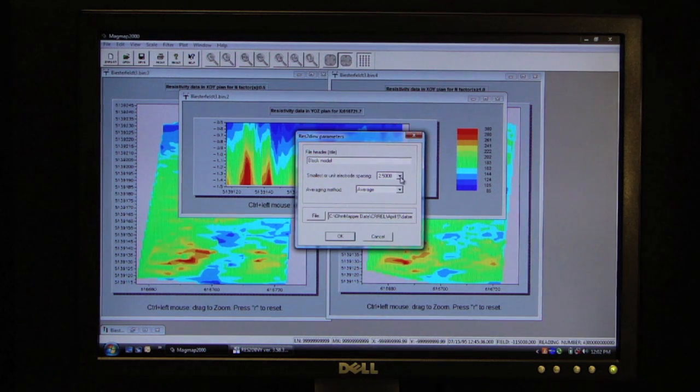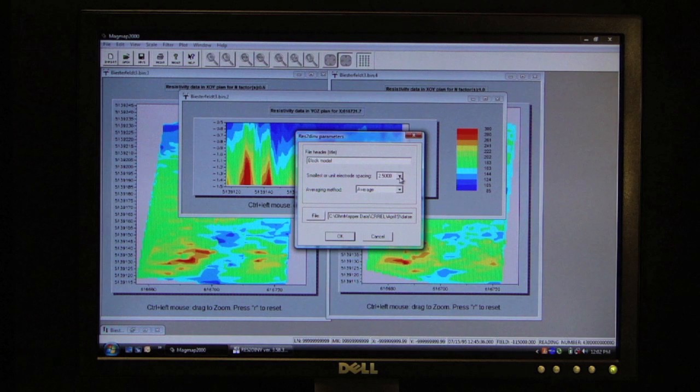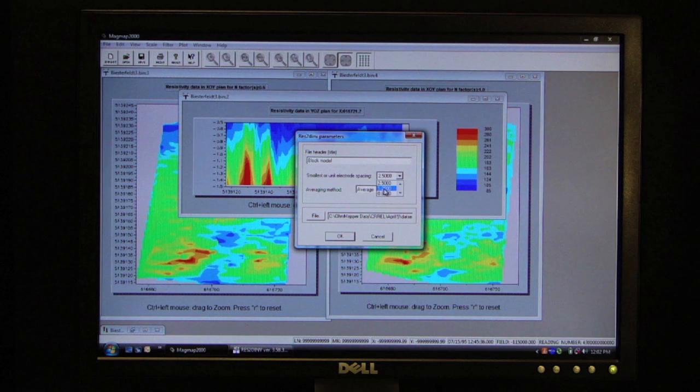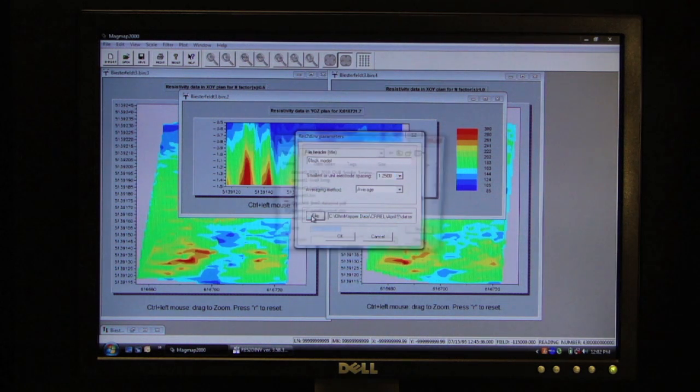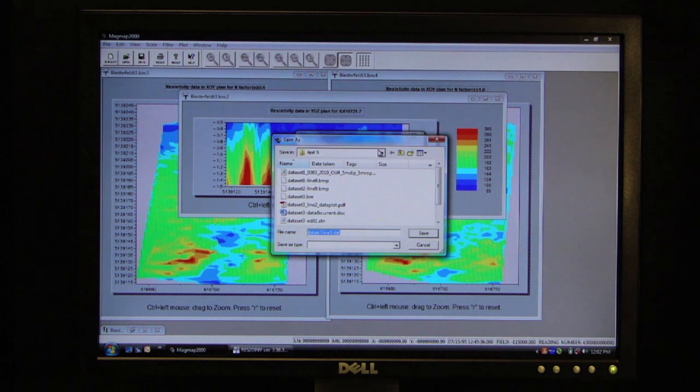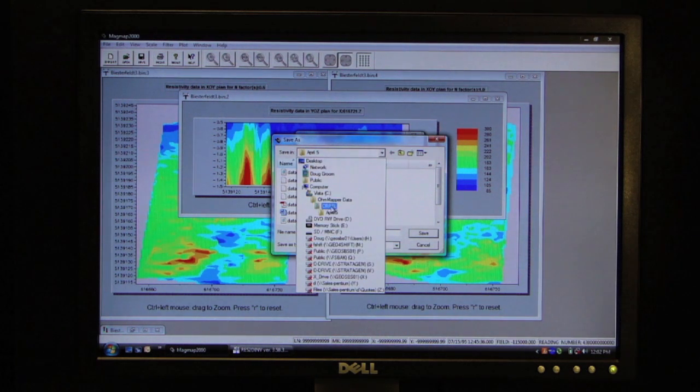What I'm going to do is, we have data at approximately 1 meter intervals, so I'm going to select 1.25 meters for my data interval. I'm going to average it, and I'm going to give it a position, and I'm going to save this data.